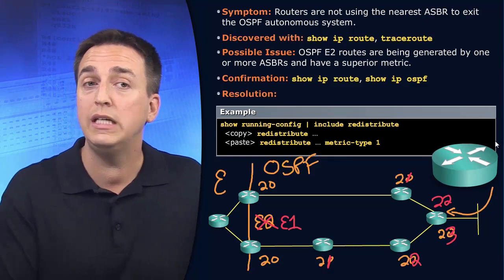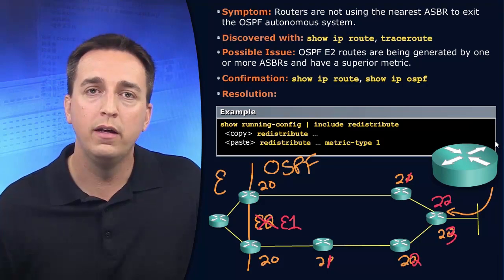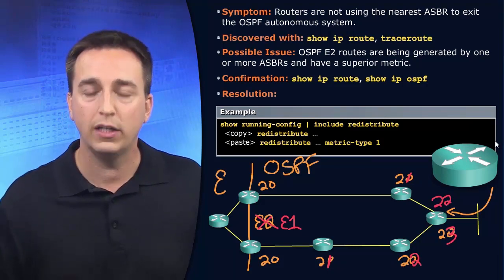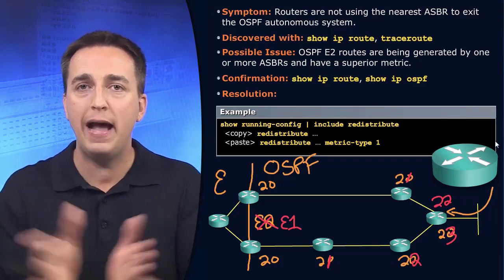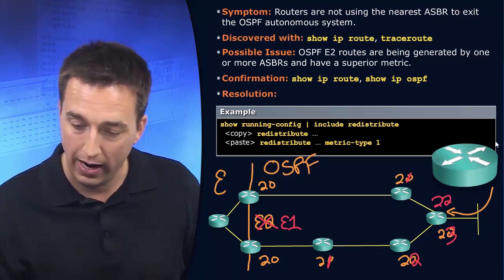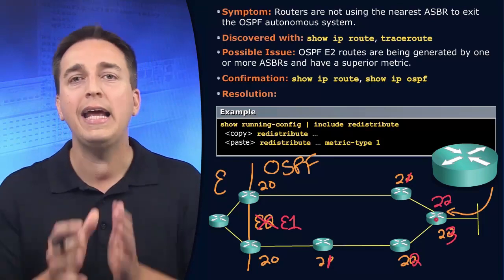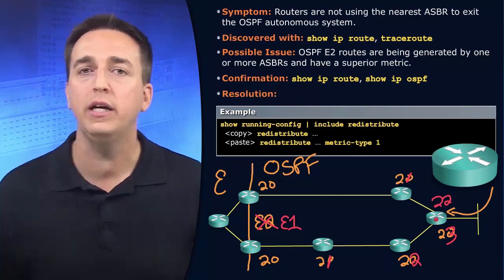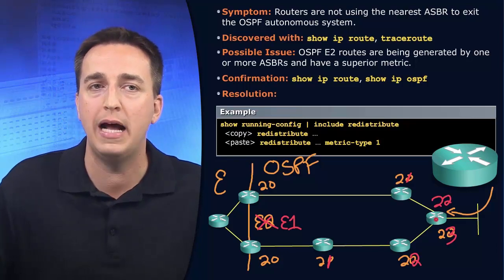Because if not, you're using E2 by default. And when you're using E2 by default, as soon as there becomes multiple paths within the topology to reach ASBRs as we see right here, that ASBR may be choosing the suboptimal path. It may be choosing the wrong path.